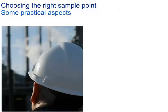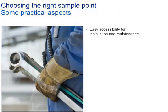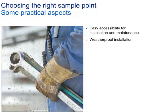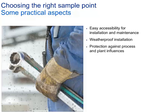At the very beginning of the measurement, the customer has to choose the right sampling point in a process. Here are some practical aspects: if possible, select a point with easy accessibility for installation and maintenance; weatherproof installation should be preferred with protection against direct sun and rain; and the sample point should be protected against process and plant influences like pressure changes, heat, or dirt.